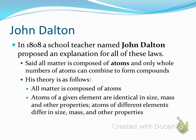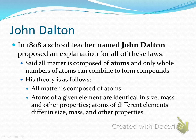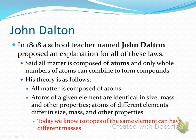Dalton's theory states: all matter is composed of atoms. Atoms of a given element are identical in size, mass, and other properties. Atoms of different elements have different size, mass, and other properties. He said every single oxygen atom has the same size, the same mass, the same properties. However, today we know something different — there are things called isotopes. Isotopes of the same element can have different masses. An isotope is basically two versions of the same element that have different masses.